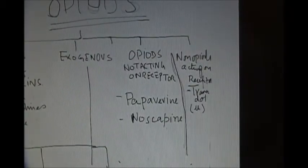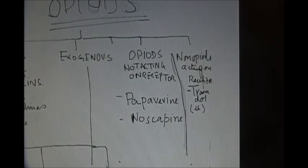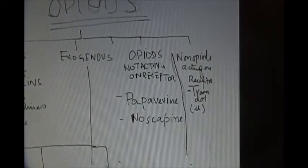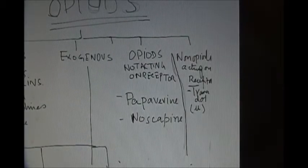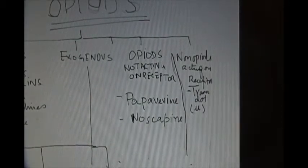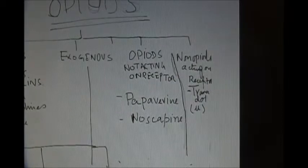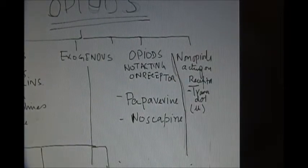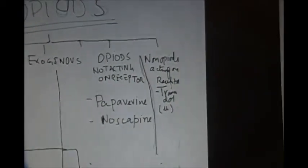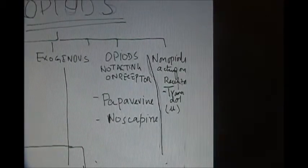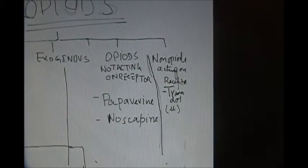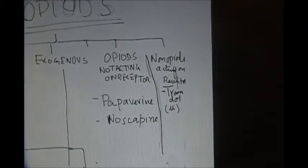The exogenous opiates that do not act on the opioid receptors are papaverine and noscapine. The fourth category is some non-opiates that act on opiate receptors. Example is tramadol. Tramadol acts on mu receptors.